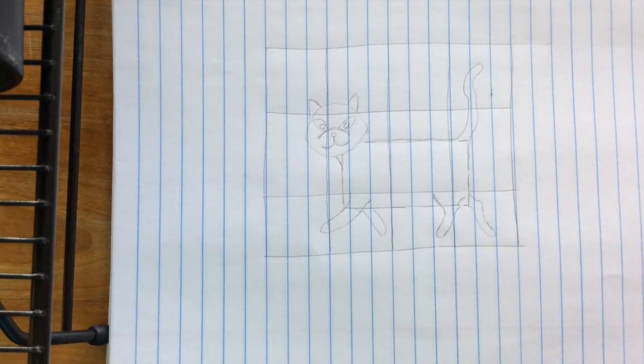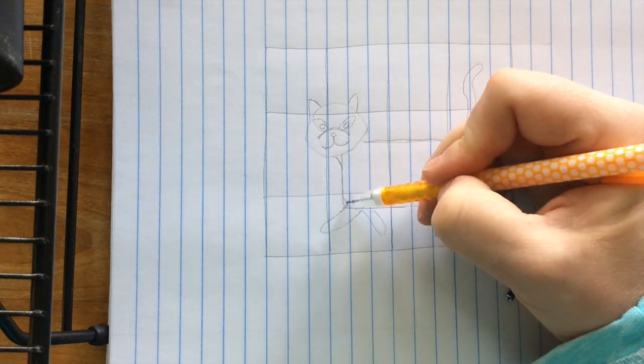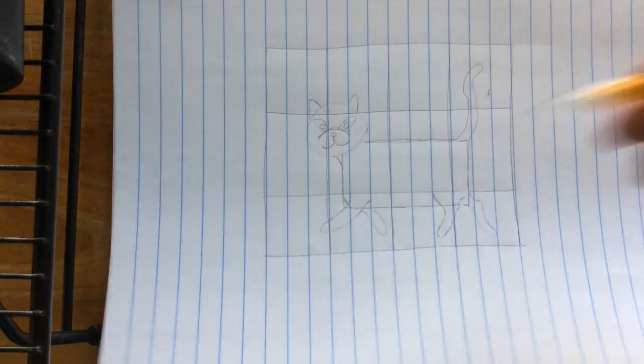And then we just go back in and kind of soften your corners. Make it look more round instead of square.